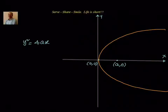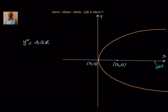Now, if we draw a line perpendicular to the axis of parabola, and also passing through the focus, then it is called as latus rectum. So, a line which is passing through focus and also perpendicular to the axis of parabola is called as latus rectum.